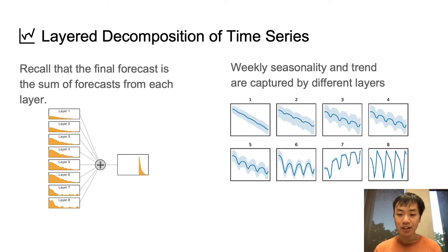Recall that our forecast is the sum of the forecast from multiple LSTM layers. This figure shows the average forecast contribution from each of the eight LSTM layers over the test period of the WikiTraffic dataset. Here, we can see that different layers capture different seasonal and trend patterns.